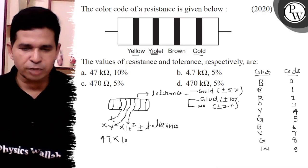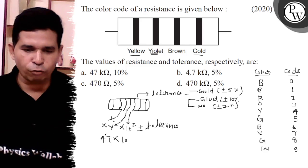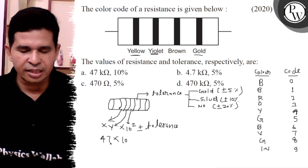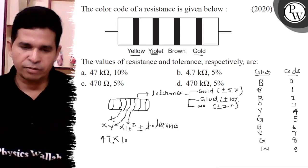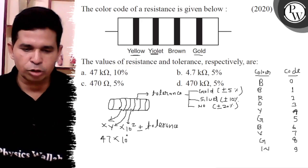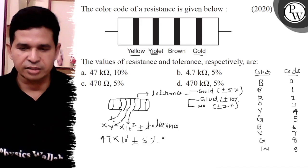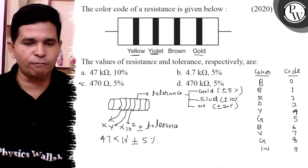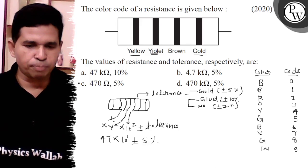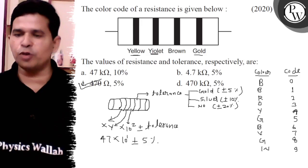So, here the value of X, because first color is yellow is 4, now second color indicates the unit place of that value of resistance and 10 to the power is 1 and plus minus 5 percent is the final answer. So, answer is the 470 ohm 5 percent, so first answer is C, thank you, all the best.